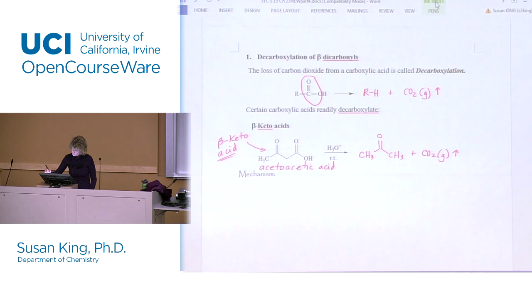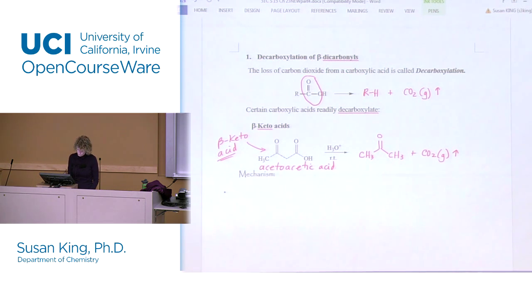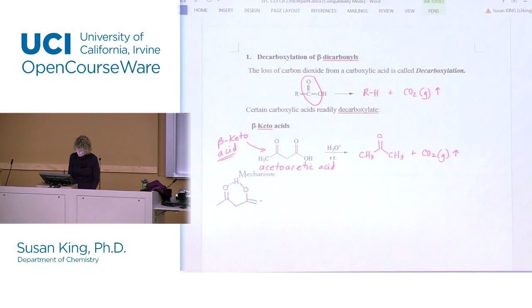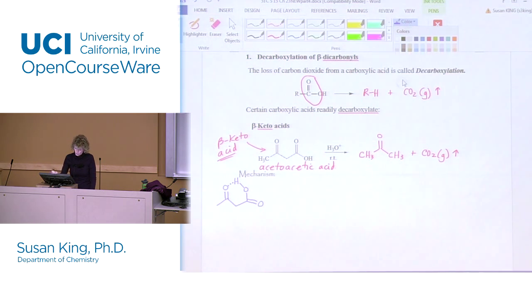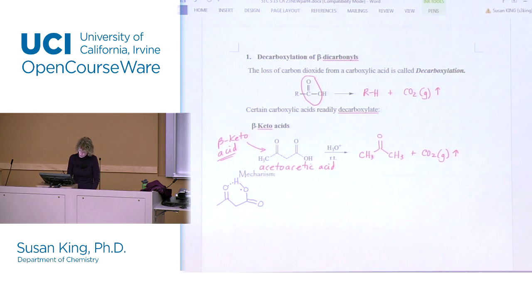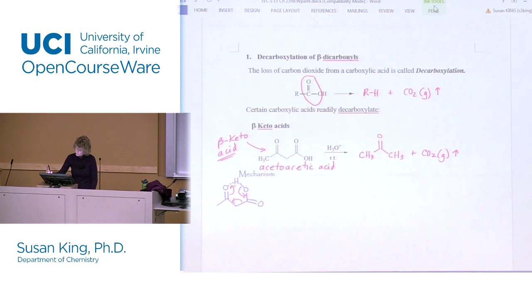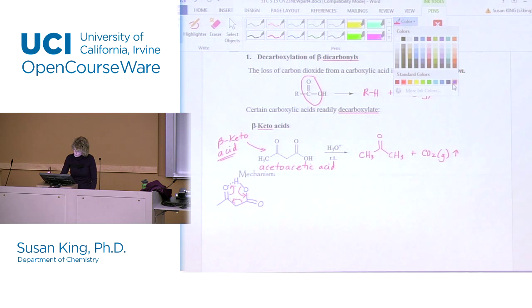How does that happen? Let's draw the mechanism. We orient the acetoacetic acid so that we form an intramolecular hydrogen bond between the carbonyl of the ketone and the hydroxyl of the carboxylic acid. Then we push electrons around in a circle — similar to Diels-Alder. You start with the double bond of this carbonyl and move it over to make a new bond. That part of the reaction is a concerted reaction.